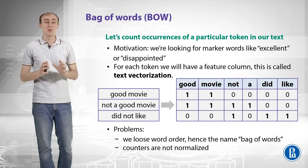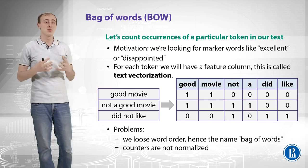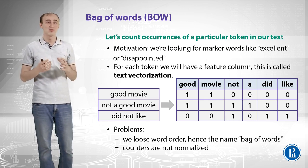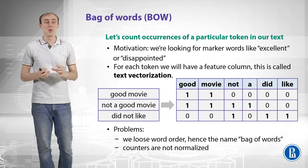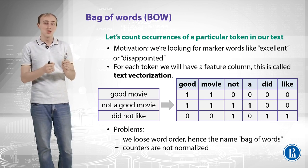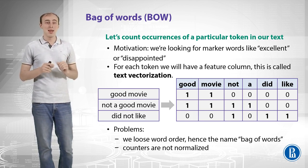Let's count occurrences of a particular token in our text. The motivation is the following: we are actually looking for marker words like 'excellent' or 'disappointed', and we want to detect those words and make decisions based on the absence or presence of that particular word, and how it might work.